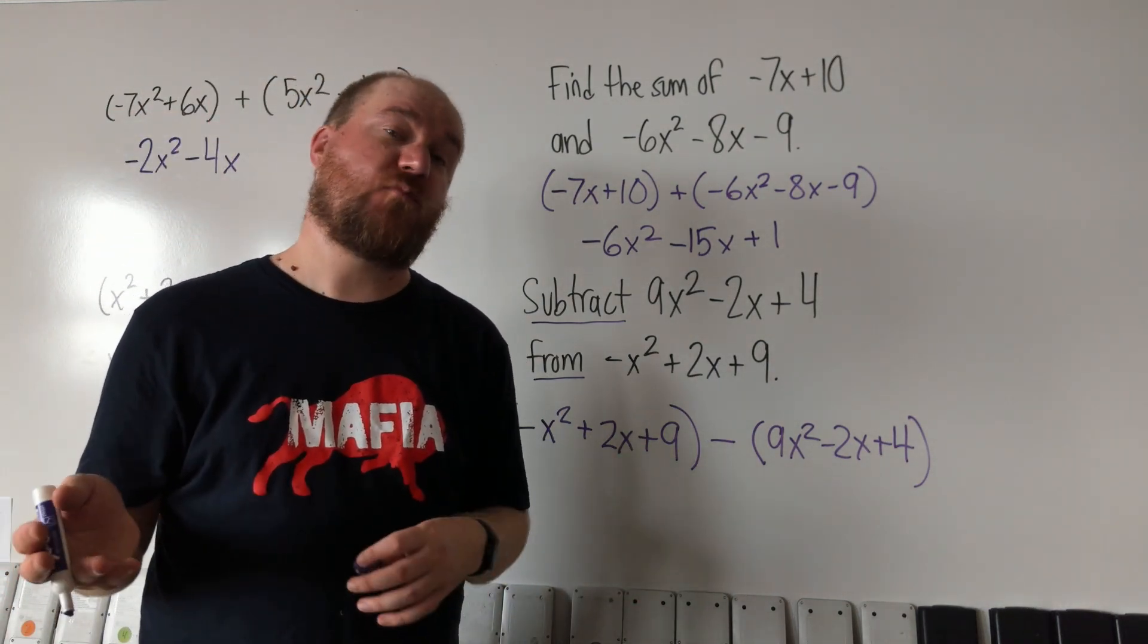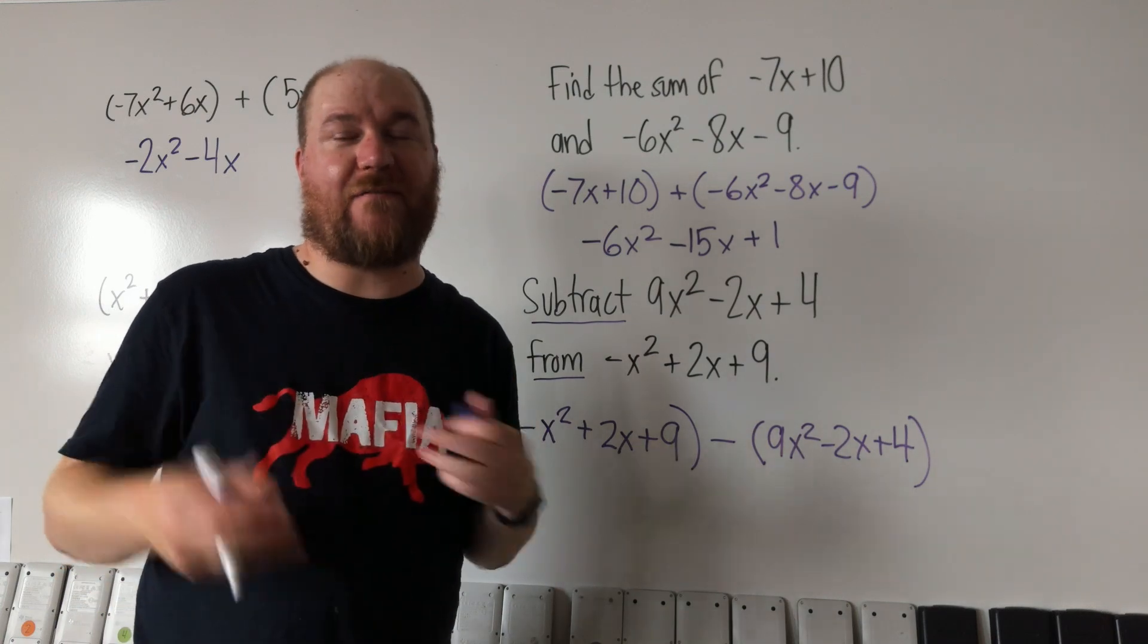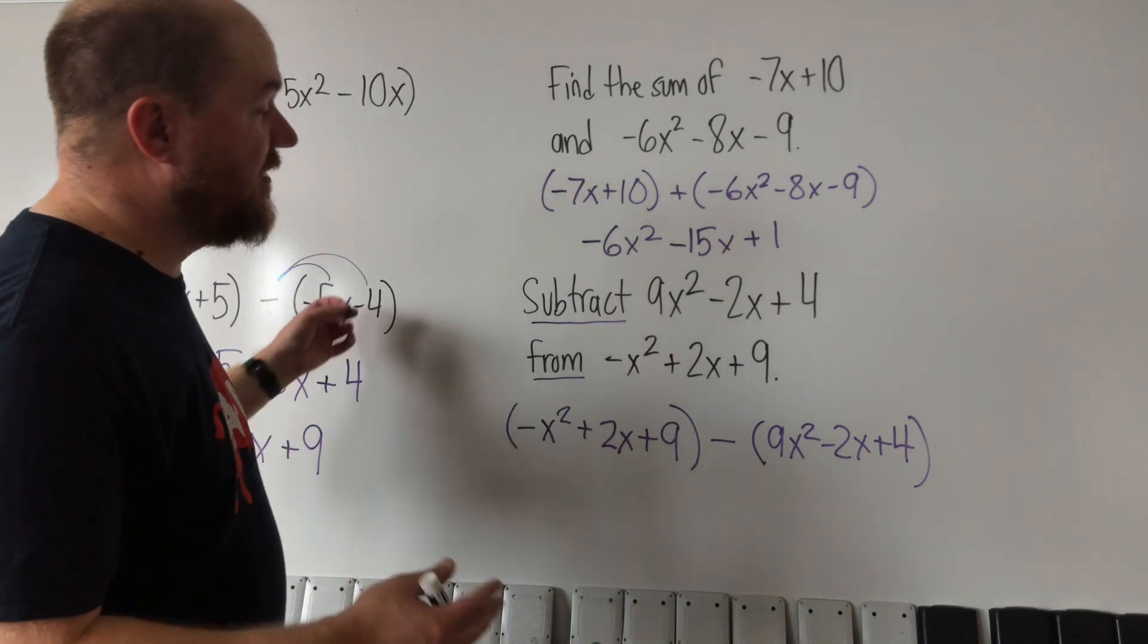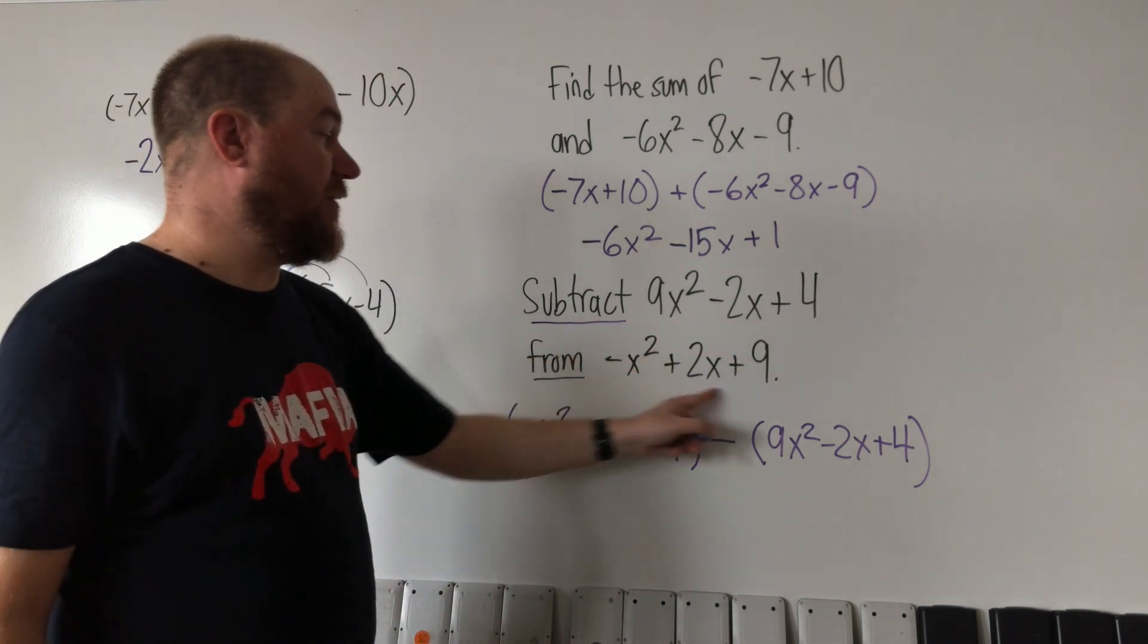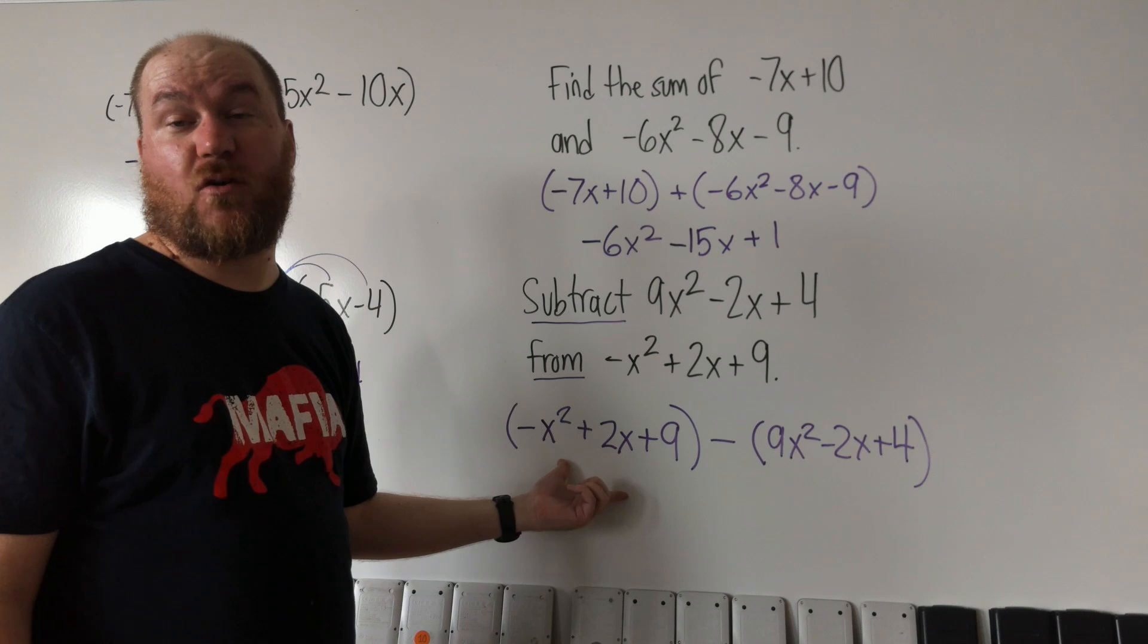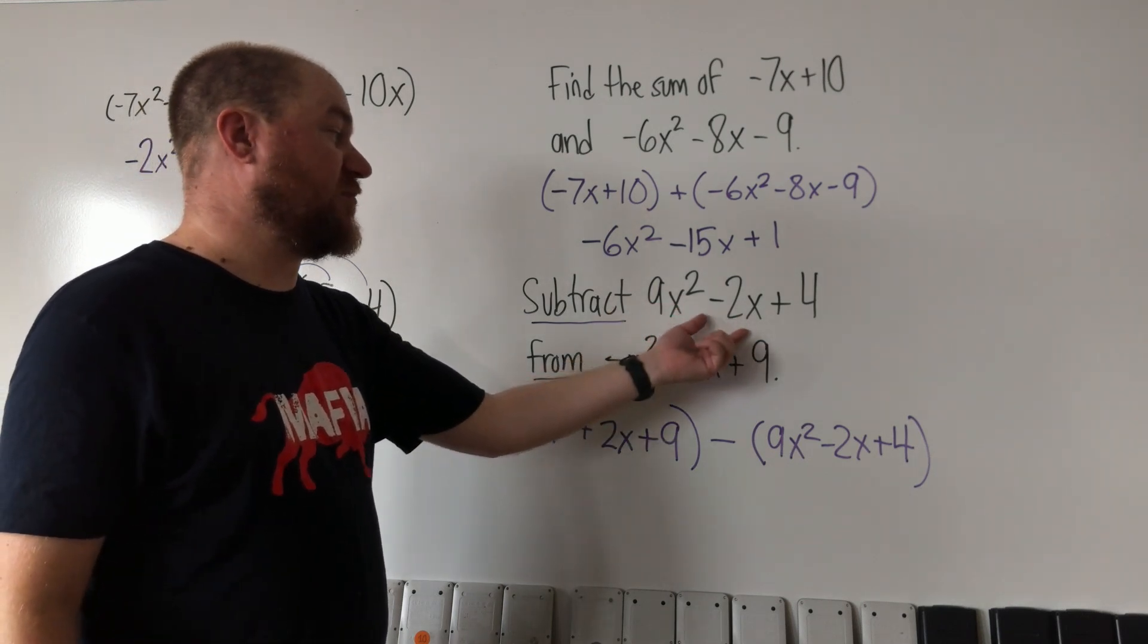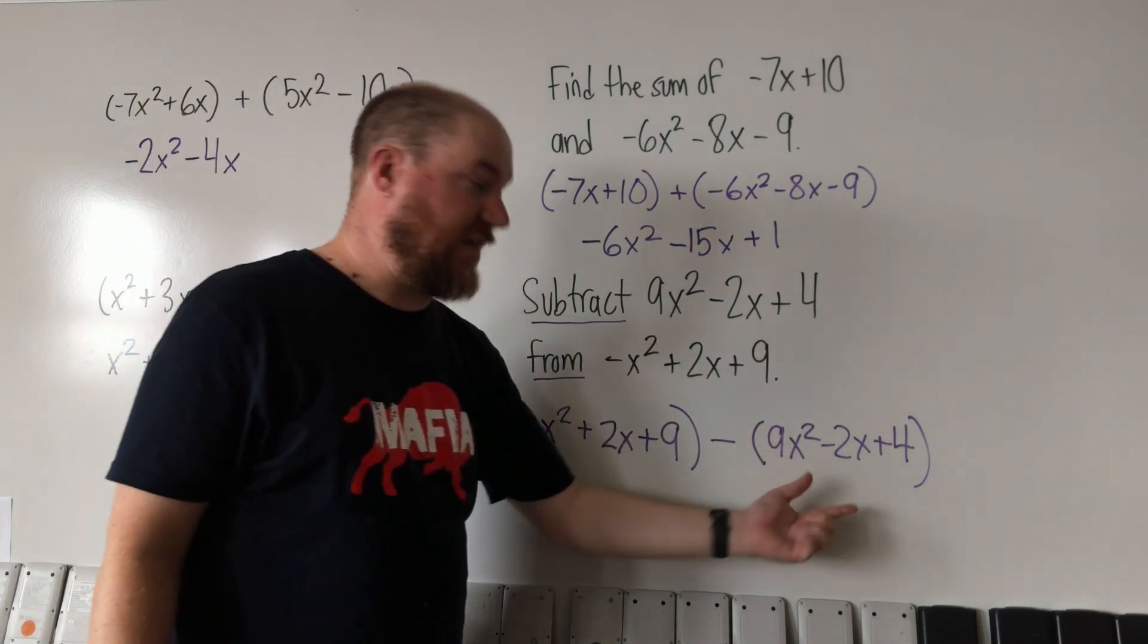If I was telling you to subtract 2 from 11, you're not doing 2 minus 11. You have 11 and you're taking 2 away from it, 11 minus 2. Same thing here. You need to take this from this. So this is what we have. That needs to go first, and then this is what's being taken away, so that's why that one went second.